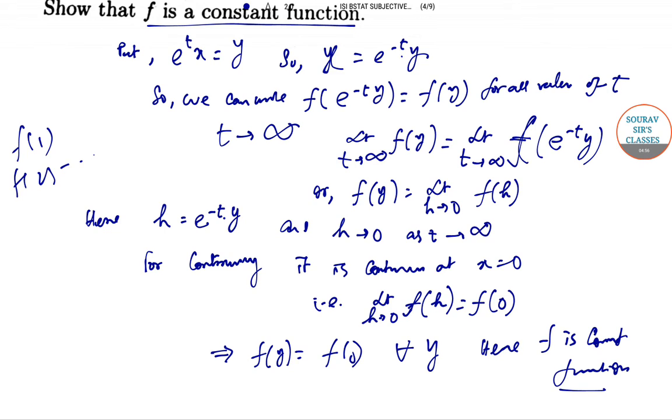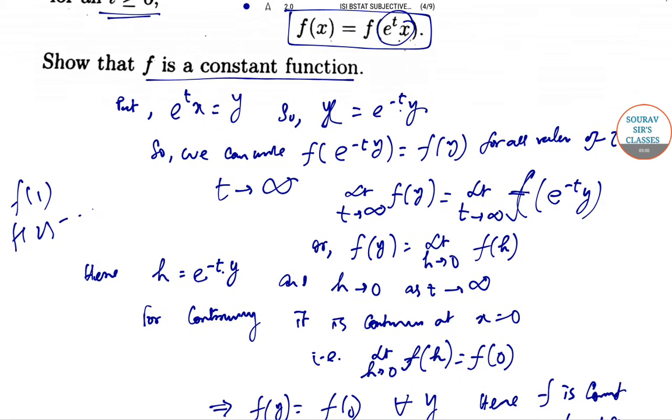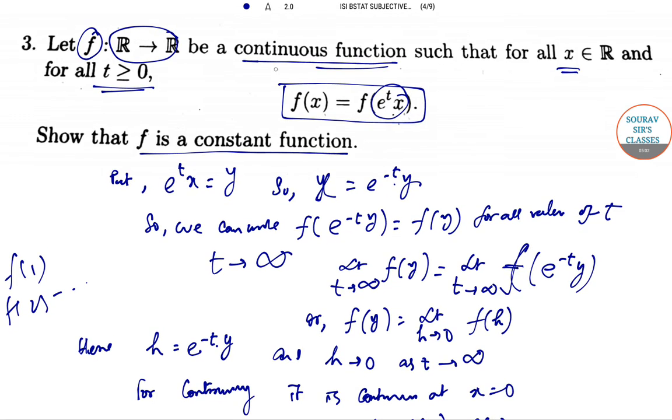Remember that continuity does not always guarantee differentiability. But, in this functional structure, we can say that this continuous function actually comes out to be a constant function. At a different point, we get the same value. In the next video, I will solve from question number 4.